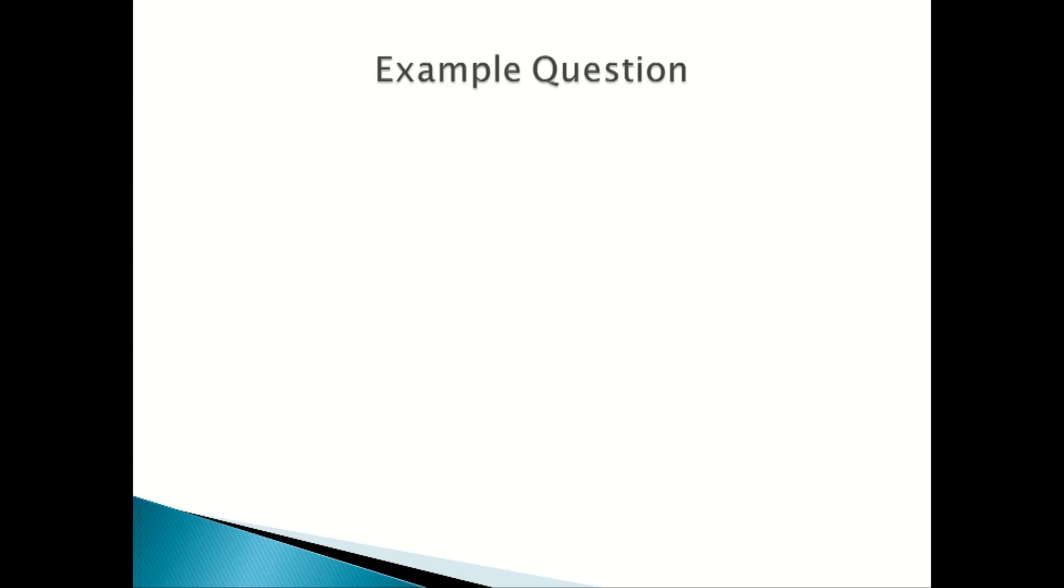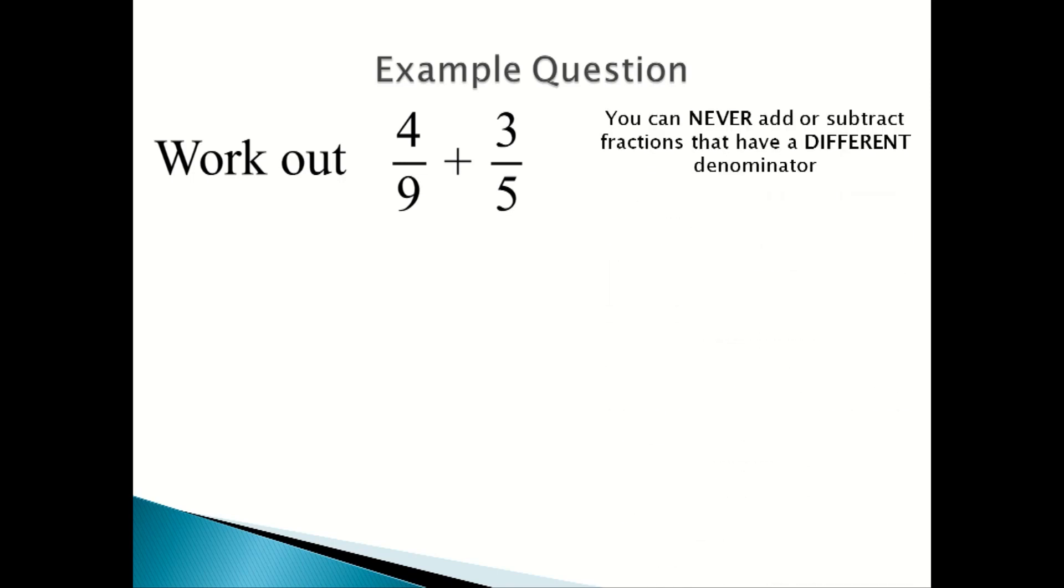Now we're going to look at an example question. Even though it's the same question on how to get a common denominator, I'll show you how to get the actual answer for the question. So as we know, you can never add or subtract fractions that have a different denominator. So you first find the LCM of 9 and 5, which is 45, so the denominator will be 45.